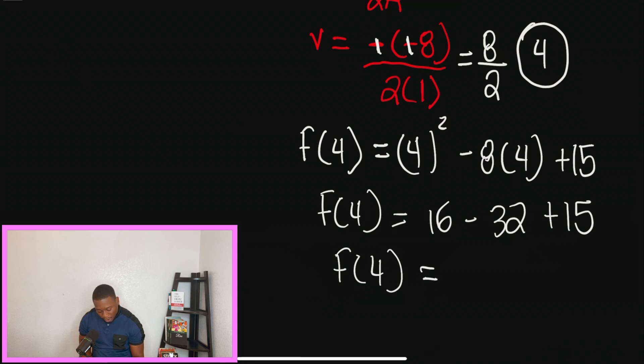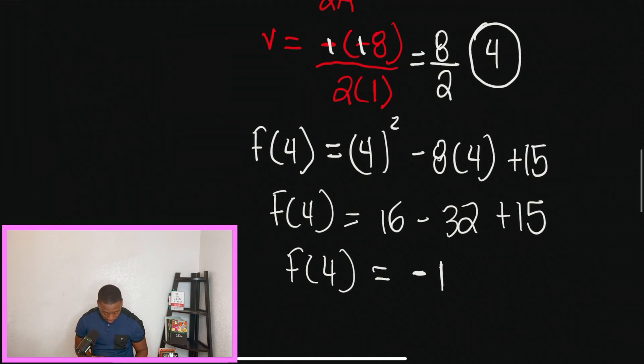And once we clean this up using order of operations, we are going to get negative 1 as an answer. So what does this answer mean? This answer means that my vertex, the complete coordinate for the vertex, is now 4 comma negative 1.